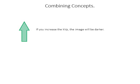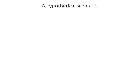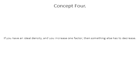To summarize: if you increase the KVP the image will be darker; if you increase the MAS the image will be darker; if you decrease the KVP the image will be lighter; if you decrease the MAS the image will be lighter. If your image has the perfect density and you want to achieve that same density at a higher KVP, you need to compensate by decreasing the MAS. If you increase one factor, something else has to decrease to maintain the same density.